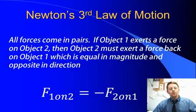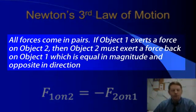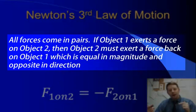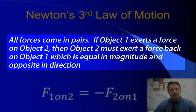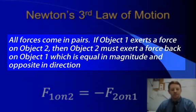Newton's third law of motion states that all forces come in pairs. If object one exerts a force upon object two, then object two must exert a force back on object one. And the force that it exerts back is exactly equal in magnitude or size, but in the opposite direction.